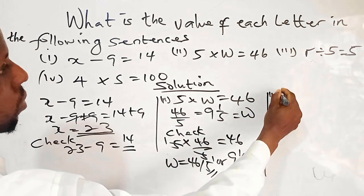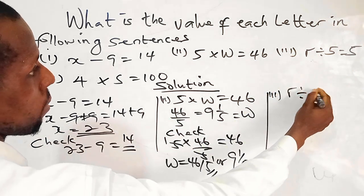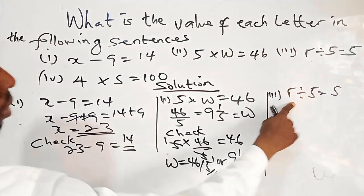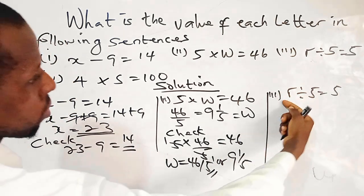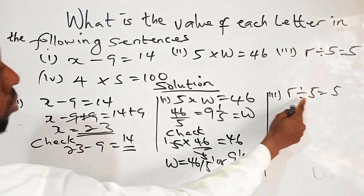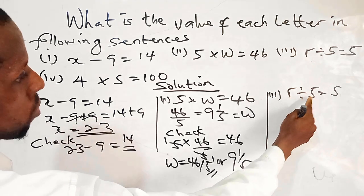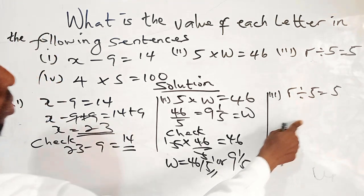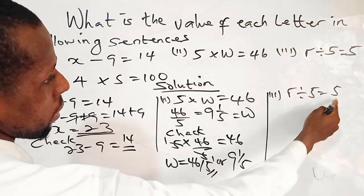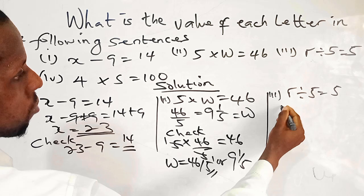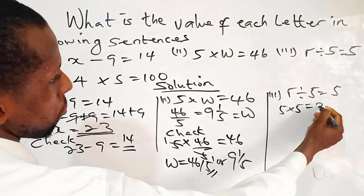For the third one, we have R divided by 5 equals 5. Since we have division, what this means is what number do you divide with 5 to give you 5? So to determine the number to divide with 5 to give us 5, we need to multiply. Okay, so we have 5 times 5. That gives us 25.